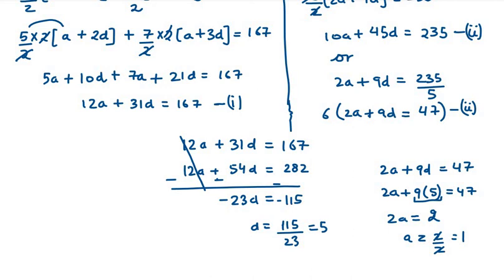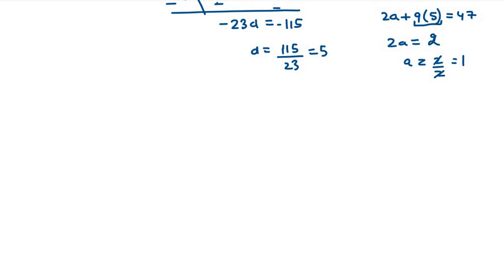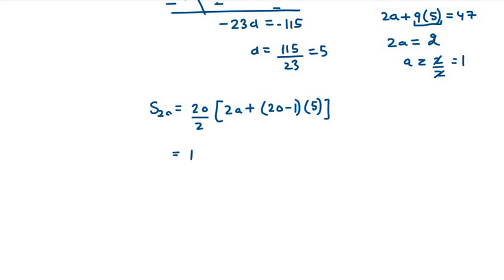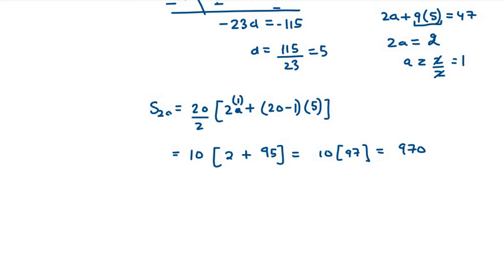Finally, we find S20 using the formula: S20 = 20/2 × (2a + 19d) = 10 × (2×1 + 19×5) = 10 × (2 + 95) = 10 × 97 = 970. So the sum of the first 20 terms is 970.